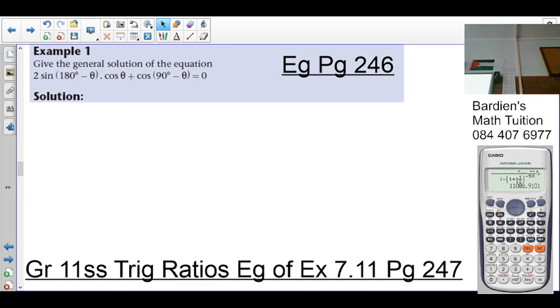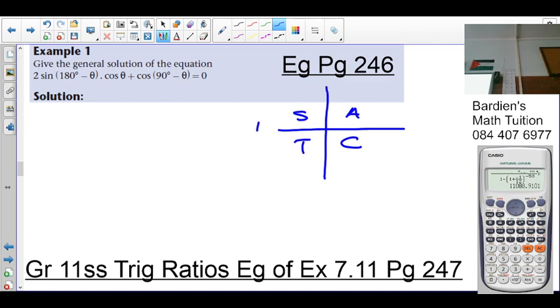Example 1 on page 246. We are told to give the general solution of the equation. So we've got 2 sin(180° - θ) cos(θ) + cos(90° - θ) = 0. So the first thing we need to do is we need to reduce this using co-function identities. So 180 minus theta takes you to the second quadrant and sine is positive. So it's positive 2 sin θ times cos θ. Now 90 minus takes you to the first quadrant, so we'll change this to sine. So it's sine θ and that is equal to 0.